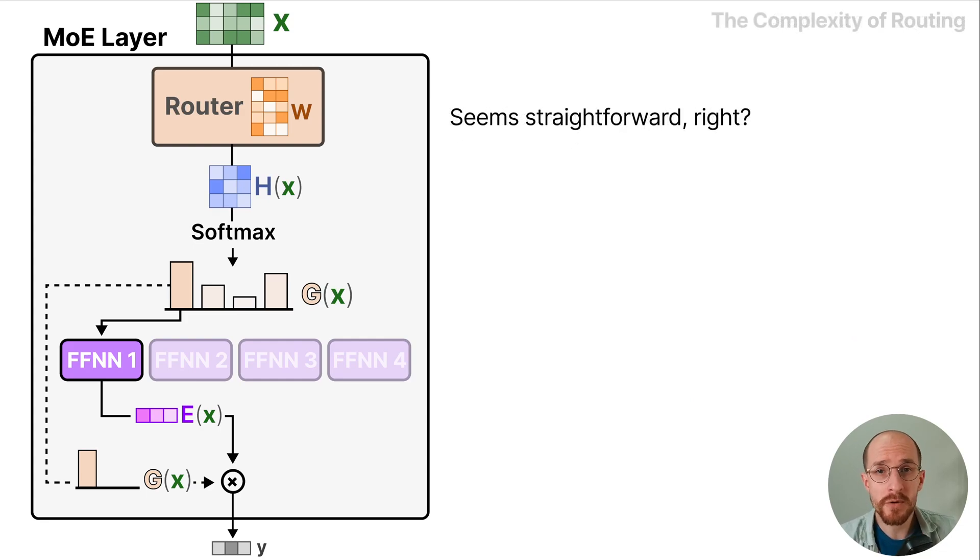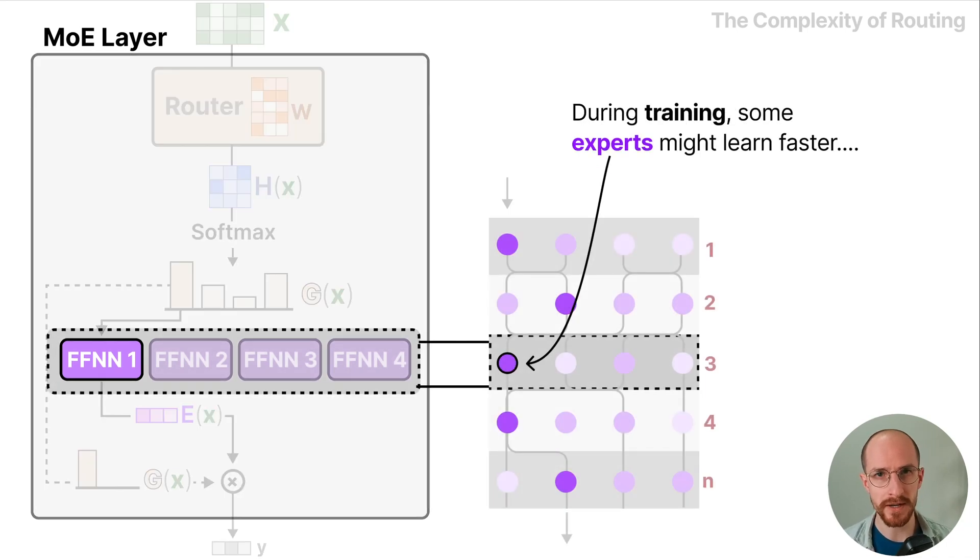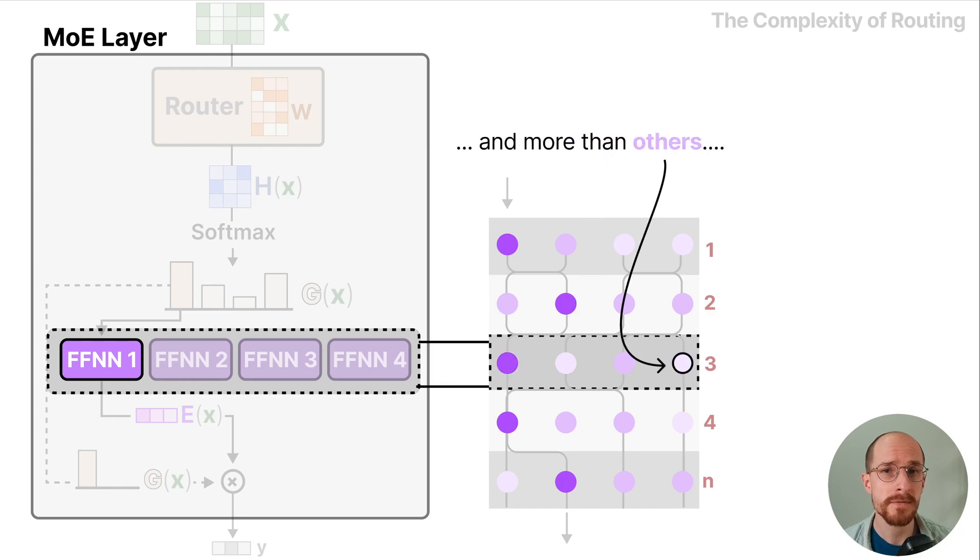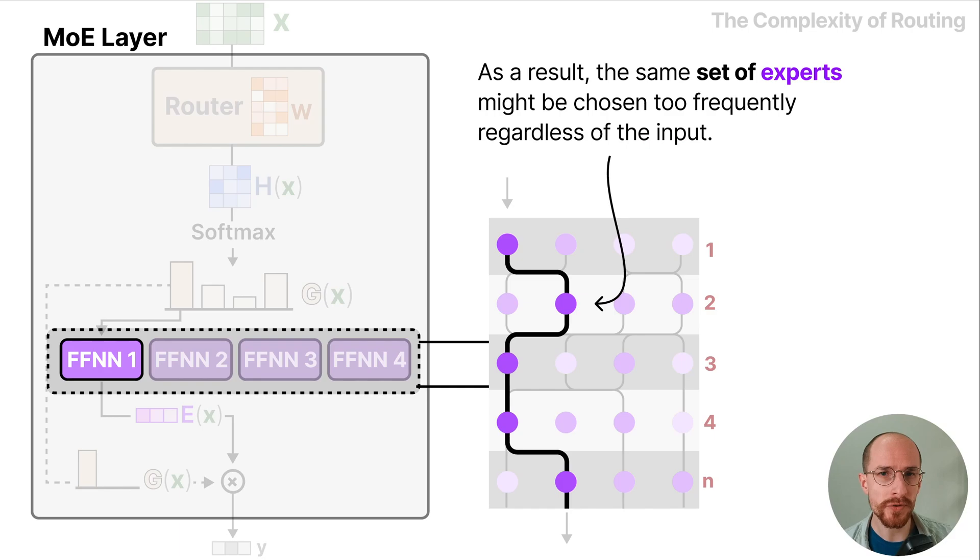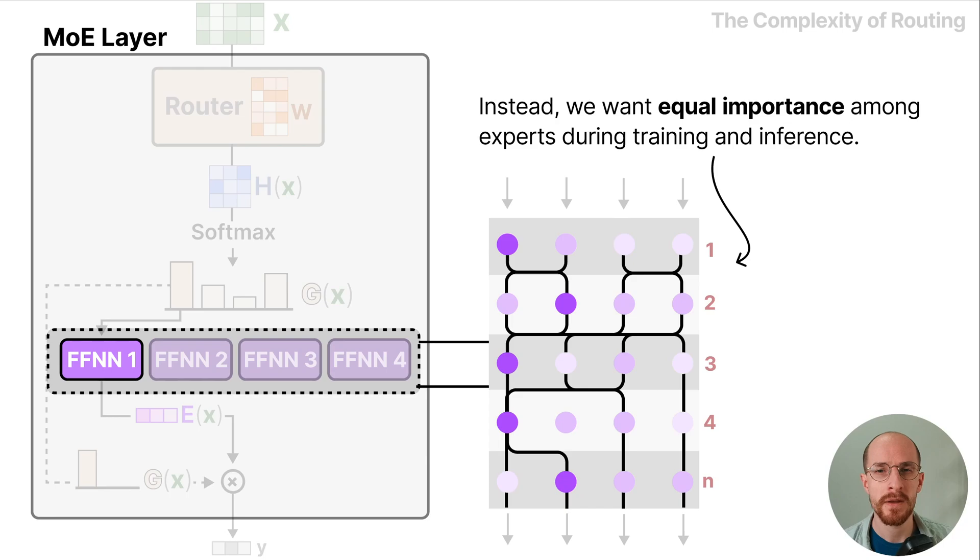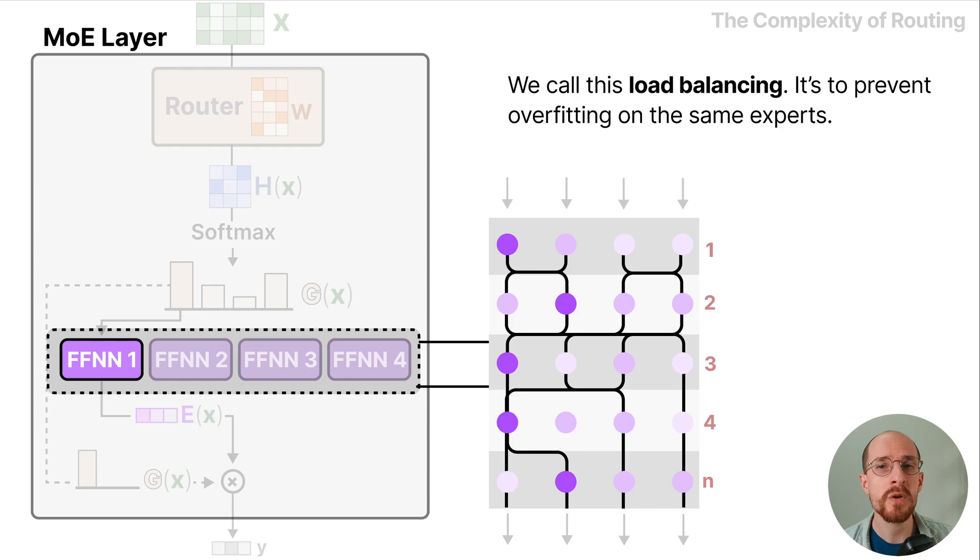And it seems straightforward right? Well there is one big disadvantage. During training some experts might learn faster and more than others. As a result the same set of experts might be chosen too frequently regardless of the input. Instead we want equal importance among experts during training and inference. We call this load balancing and it's to prevent overfitting on the same experts.